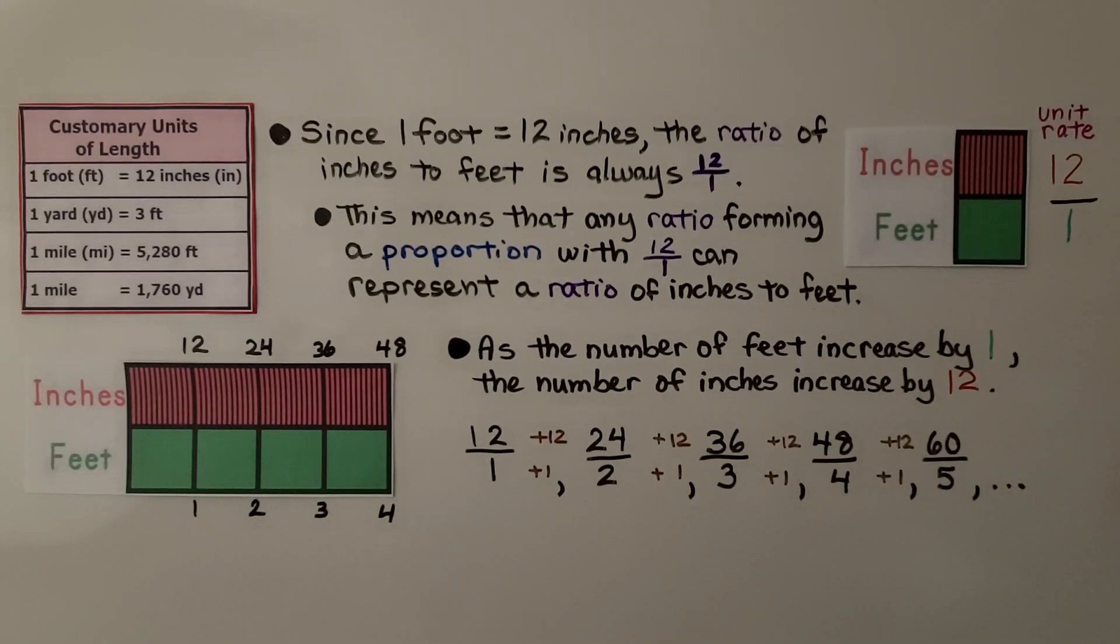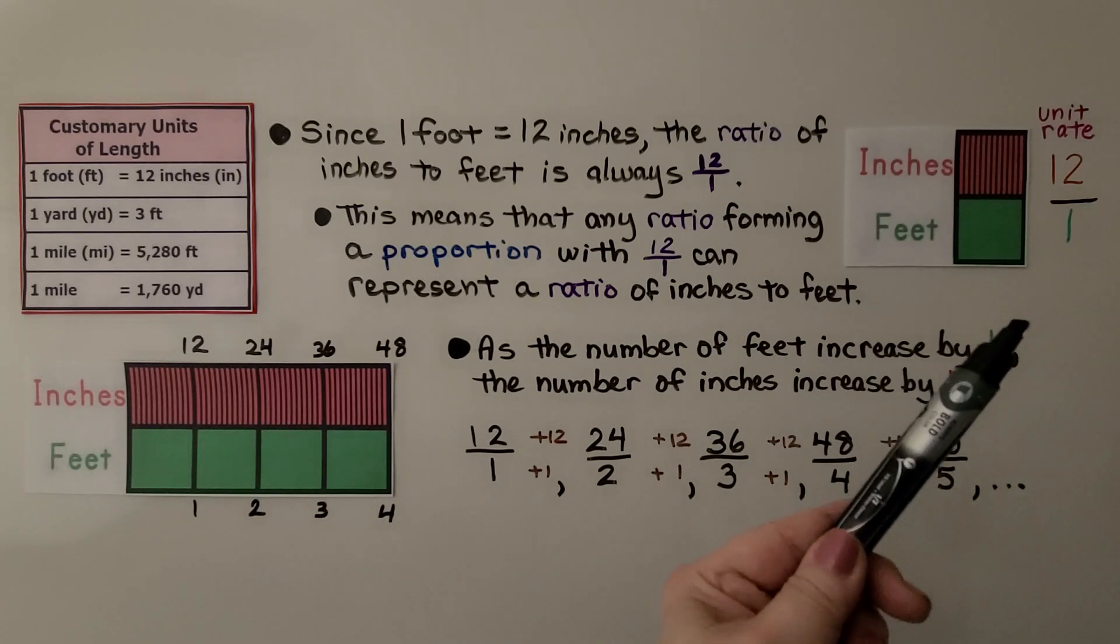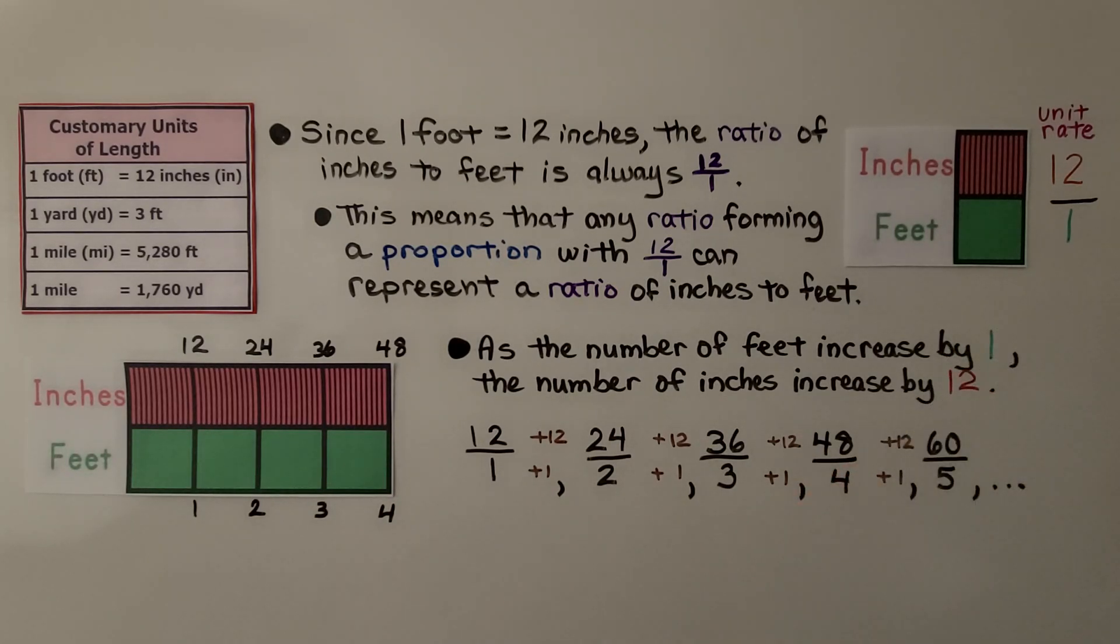Since one foot is equal to twelve inches, the ratio of inches to feet is always twelve to one. This means that any ratio forming a proportion with twelve to one can represent a ratio of inches to feet. We have twelve to one, twenty-four to two, thirty-six to three. As the number of feet increase by one, the number of inches increase by twelve.